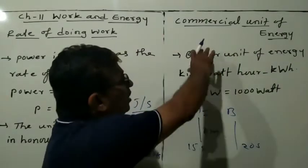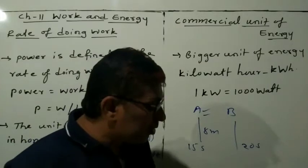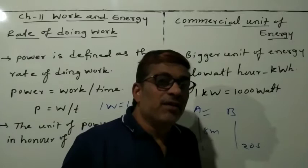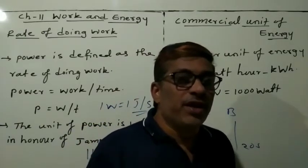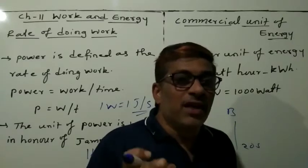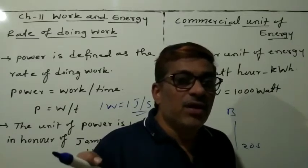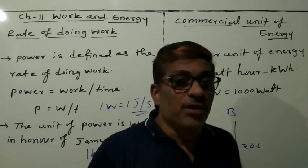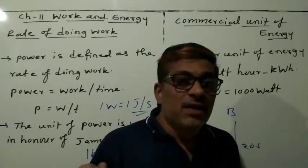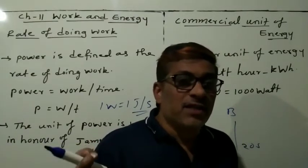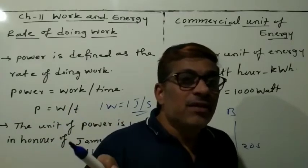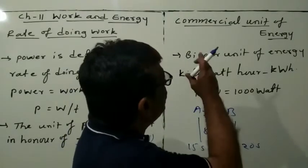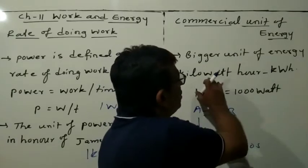Now we will discuss the commercial unit of energy. The unit joule is too small. In industrial and household areas, machines use large amounts of energy, so the unit is different — the commercial unit. Electrical energy is measured in units. The bigger unit of energy is the kilowatt hour, written as kWh. One kilowatt hour means a machine that uses one thousand joules of energy every second continuously for one hour will consume one kWh of energy.